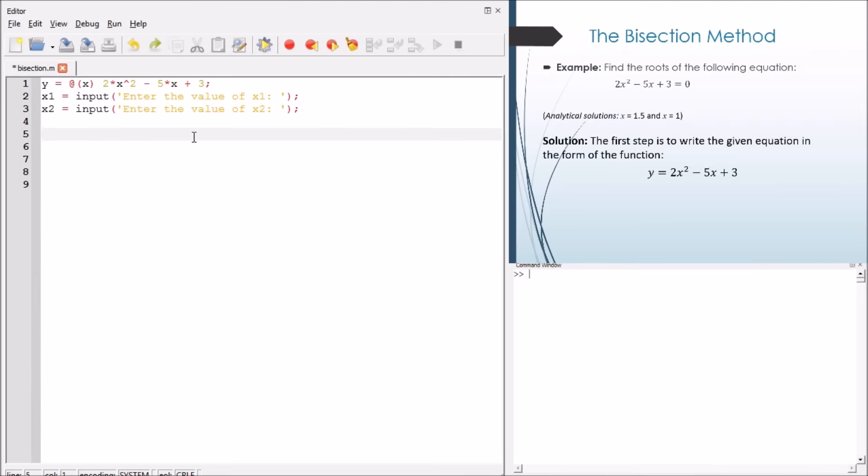Now, we make a condition if y correspondent to x1 and y correspondent to x2 have the same sign, because when we multiply two values and both have the same sign, of course the product will be positive. If they have different signs, the product will be negative.